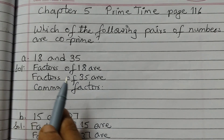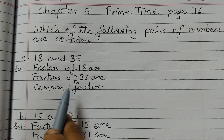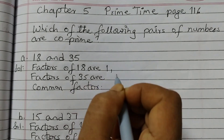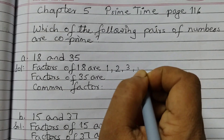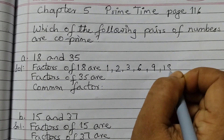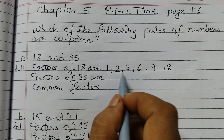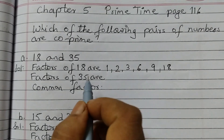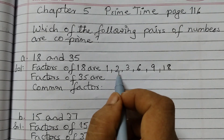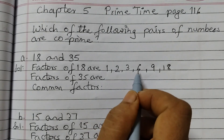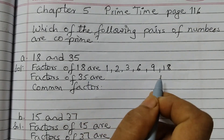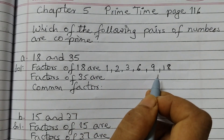First one is 18 and 35. First we will find out the factors of 18. So the factors are 1, 2, 3, 6, 9 and 18. Factors means all these numbers — if you see the table of all these numbers, you will find 18. Like 1 into 18 is 18, 2 nines are 18, 3 sixes are 18, 6 threes are 18. So 18 is completely divisible by all these numbers, so that's why these numbers are called the factors.